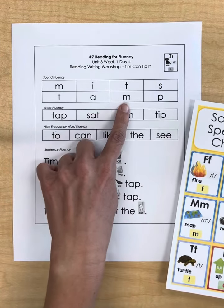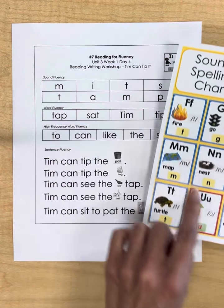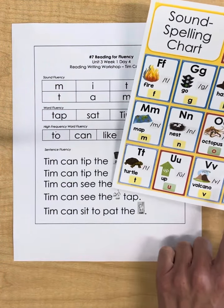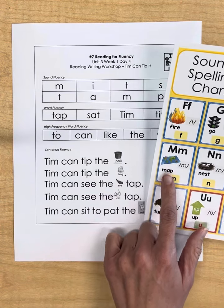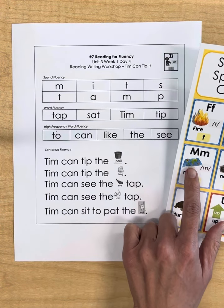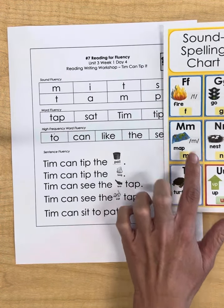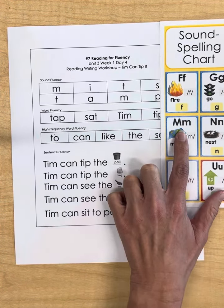If they don't know the letter M, you'll point and say, okay, here's the letter M. What picture do you see? They'll say map. What sound does it start with? They'll say mm.